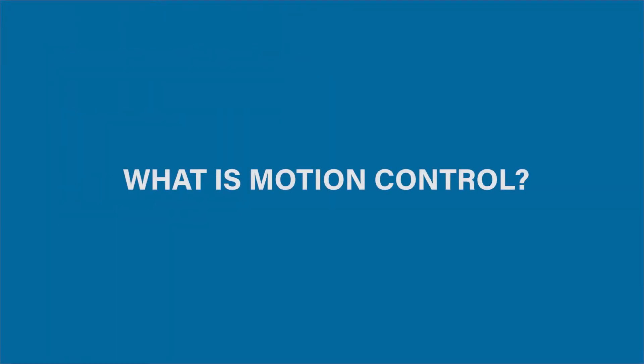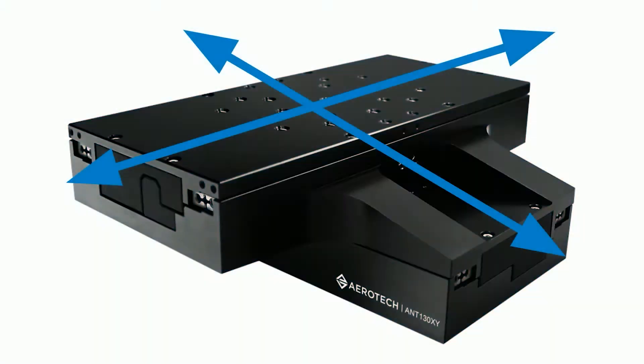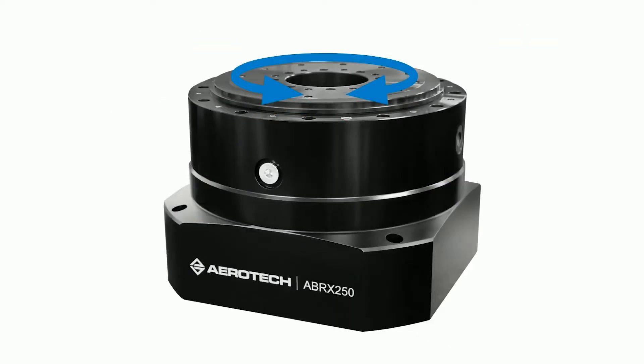What is motion control? Quite simply, motion control is controlling the motion of a mechanical device just like the one you see here. In this example, this device moves in X and Y — two degree of freedom linear motion. This device is a rotary stage.